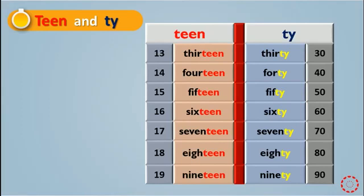Also, we have ty. For example, thirty, forty, fifty, sixty, seventy, eighty, ninety. These are bigger numbers.